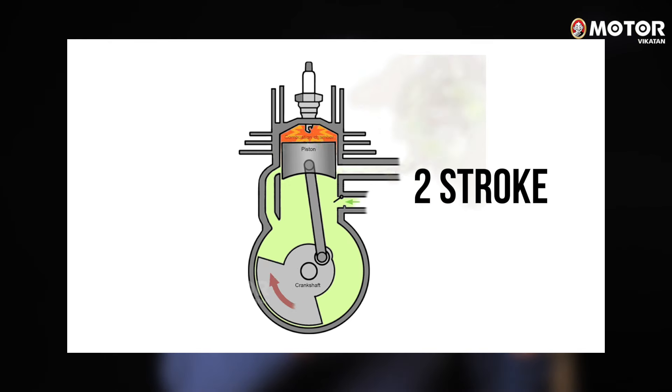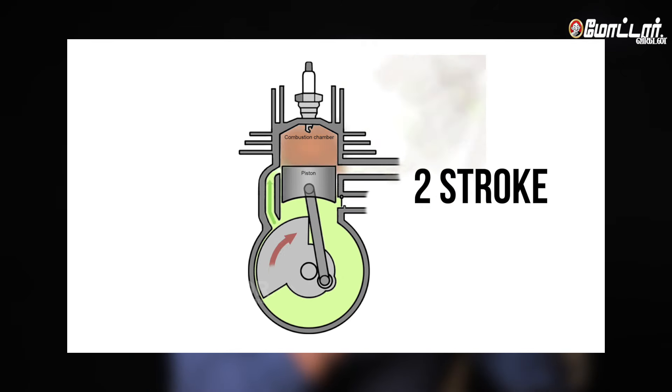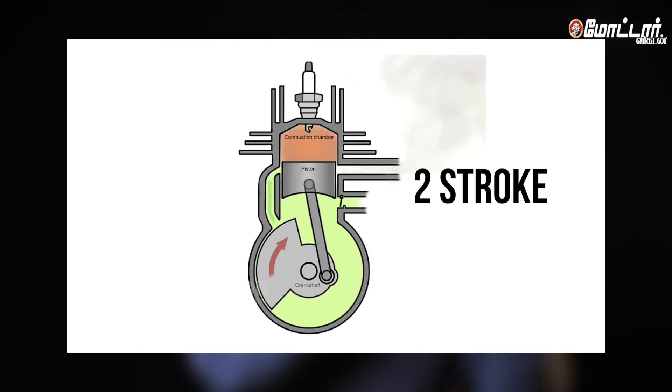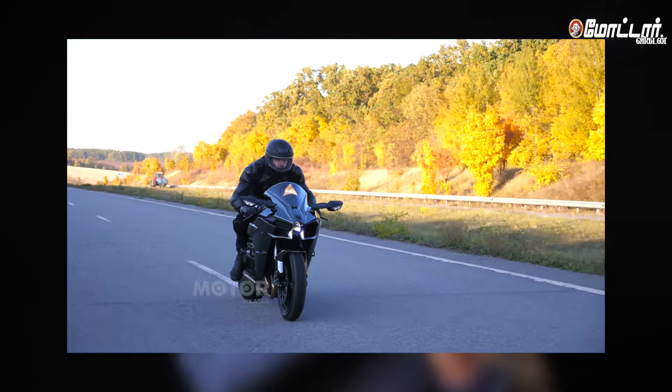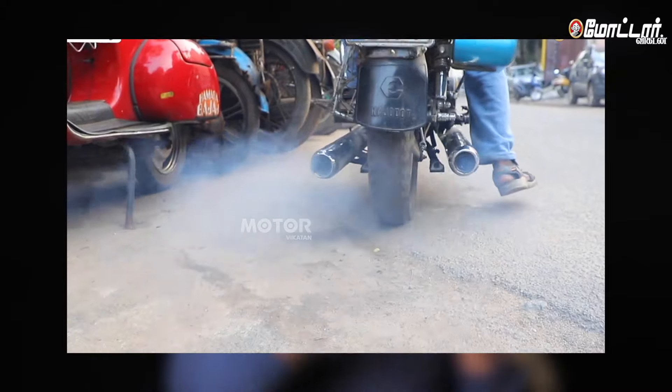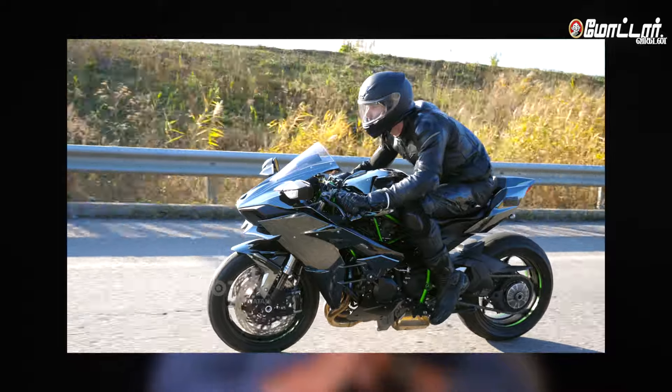A disadvantage of 2-stroke is fuel efficiency. Because fuel and air can escape through the outlet before fully burning, from one liter of petrol you may lose around 20%, making fuel efficiency very low in 2-stroke engines. In 4-stroke engines, fuel efficiency is significantly better. Also, exhaust emissions are lower in 4-stroke engines compared to 2-stroke.